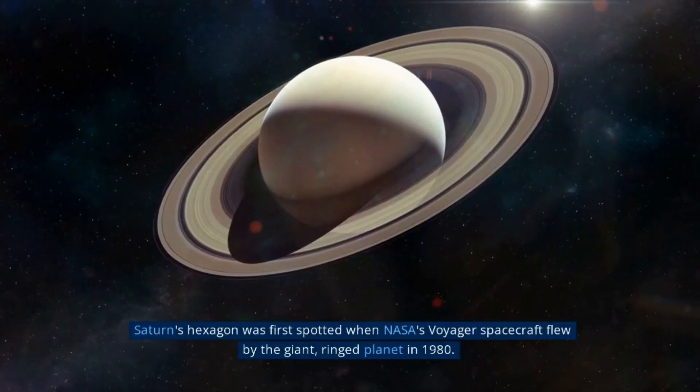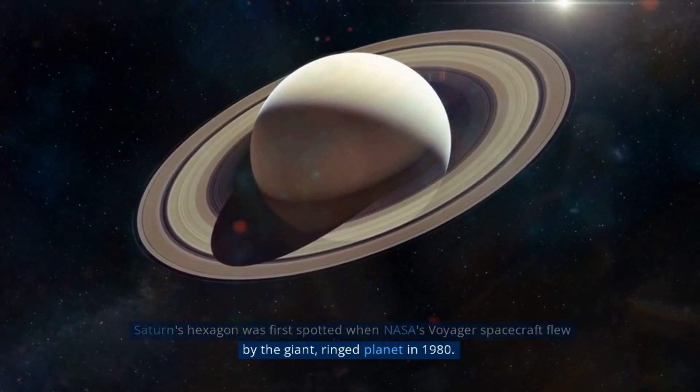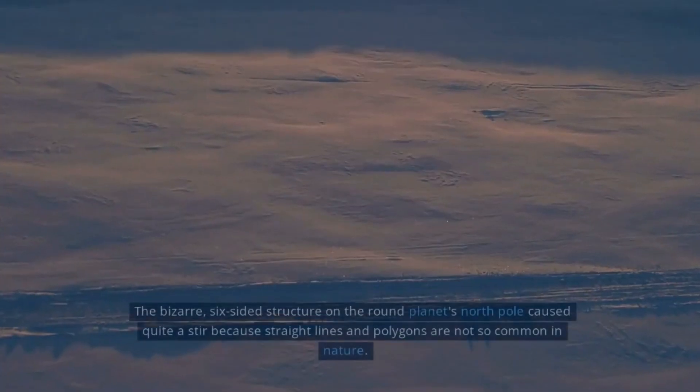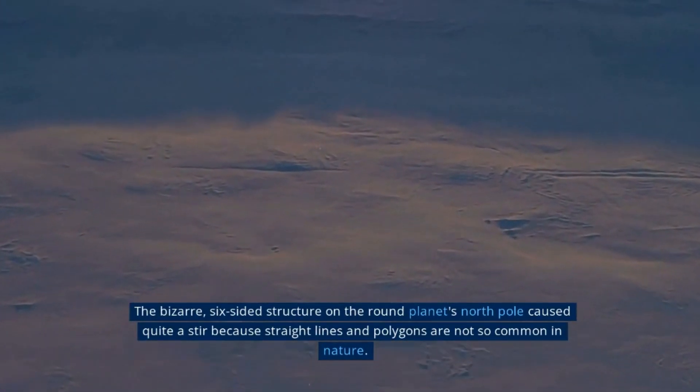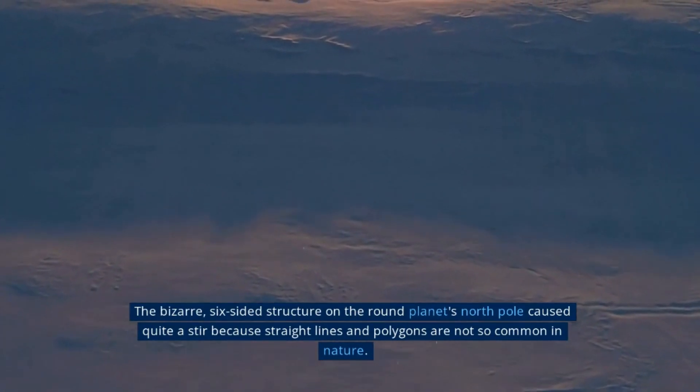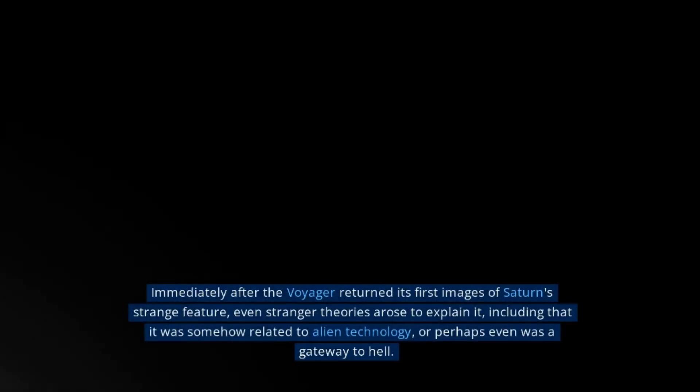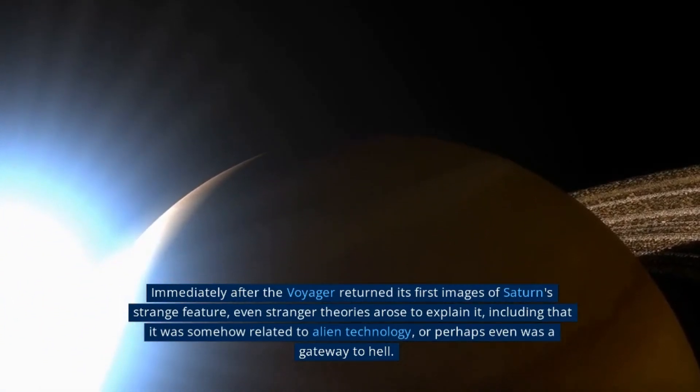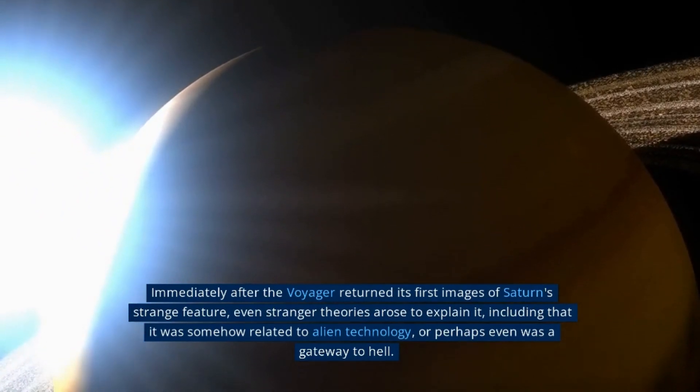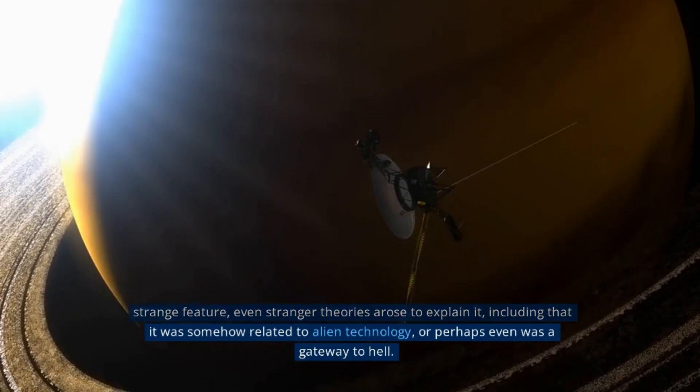Saturn's hexagon was first spotted when NASA's Voyager spacecraft flew by the giant ringed planet in 1980. The bizarre, six-sided structure on the round planet's north pole caused quite a stir because straight lines and polygons are not so common in nature. Immediately after Voyager returned its first images of Saturn's strange feature, even stranger theories arose to explain it, including that it was somehow related to alien technology, or perhaps even was a gateway to hell.